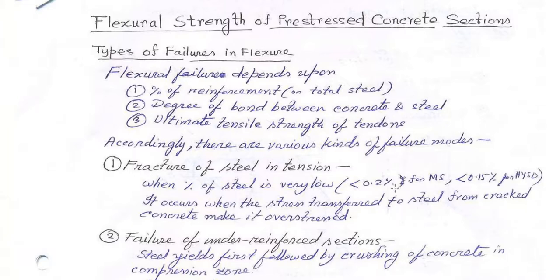Welcome back students. For today's class we are going to discuss the flexural strength of prestressed concrete sections — what happens in a prestressed concrete section under flexure under ultimate load conditions. First we need to understand the types of failures in flexure, which depend upon the percentage of reinforcement, the bond between concrete and steel, and the ultimate tensile strength of the tendons provided in prestressing.